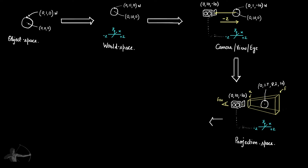Then comes clip space. Clip space is controlled by the hardware. If any portion of an object is outside the camera frustum, that object is clipped, and the coordinate space of this clipped object is called clip space. Since clip space is controlled by the hardware, we don't have control of it in shaders, so we will not work through a value example for clip space.